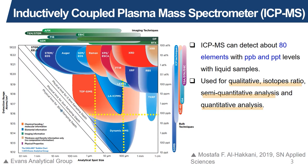As with every analysis technique, we first start off with the bubble chart of detection range against beam size. From the diagram, we see that the LA ICP-MS technique offers a chemical sensitivity down to roughly 100 parts per billion, and an analytical beam size of around 100 microns. Note that this technique is for the LA, or laser ablation ICP-MS technique, which is used primarily on solids.